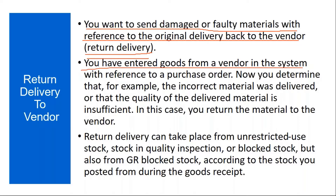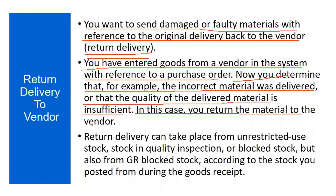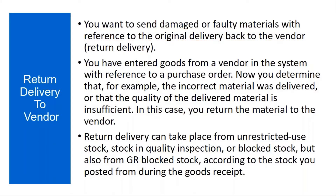You have entered a goods movement from a vendor in the system with reference to a purchase order. Now you determine that, for example, the incorrect material was delivered, or the quality of the delivered material is insufficient, or some other reason. In this case, you return the material to the vendor, which is called return delivery. Return delivery can take place from unrestricted use stock, stock in quality inspection, or even from blocked stock.